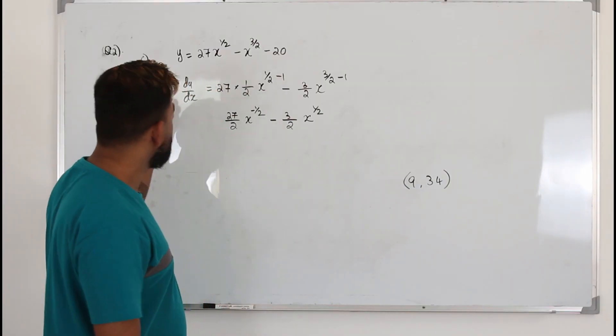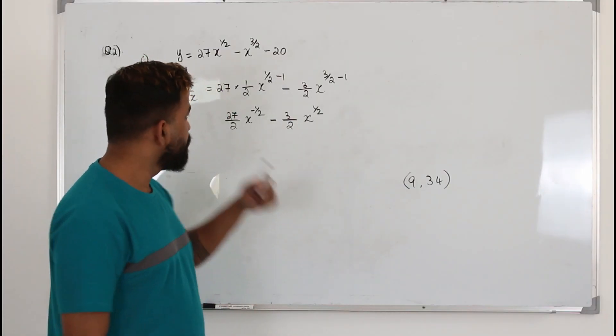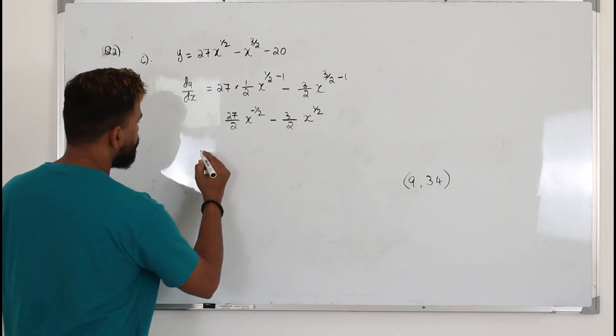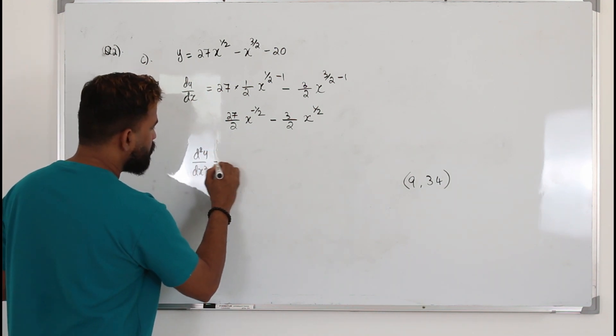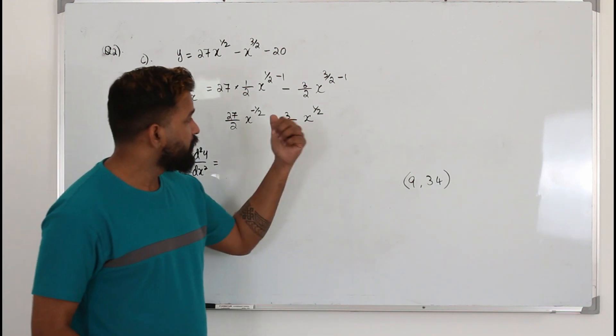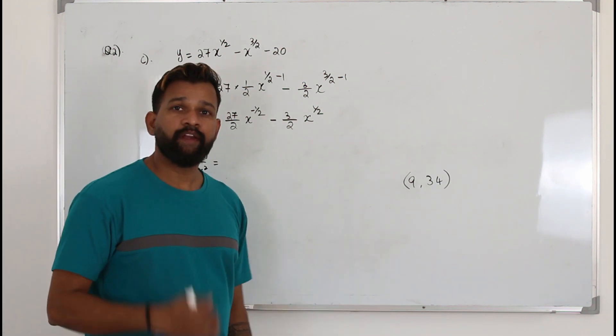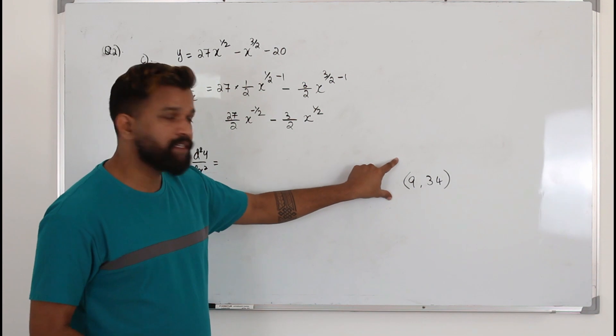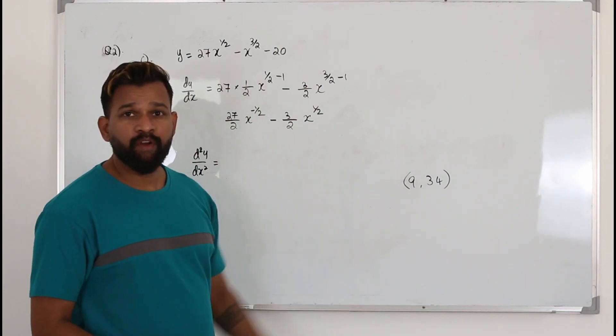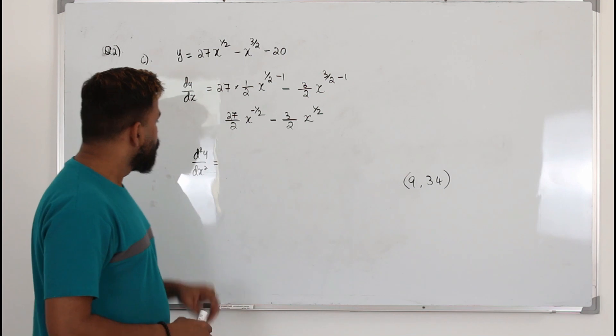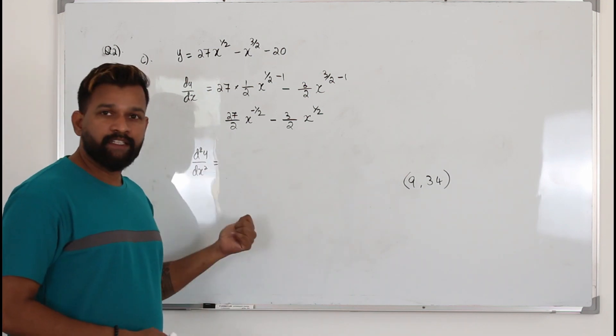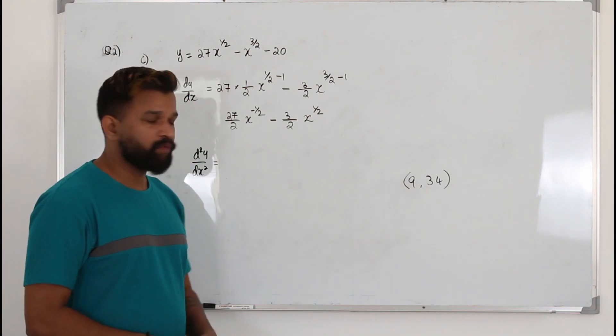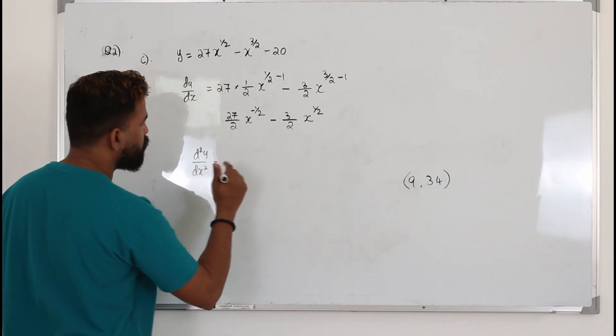What c says, find the second derivative d square y by dx square. And then they want you to find the nature of the stationary point. Nature means whether this point is a local maximum, local minimum, or point of inflection. Whether they ask you to find second derivative or not, you need the second derivative in order to find the nature of the point. So you differentiate it one more time.